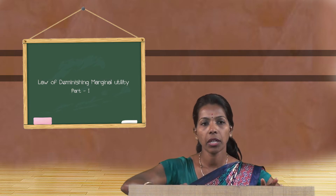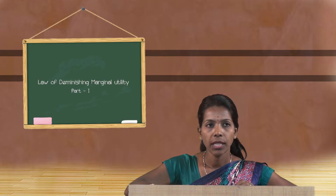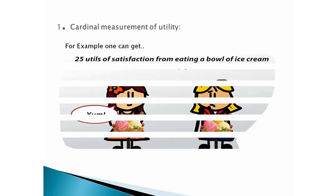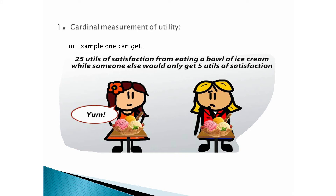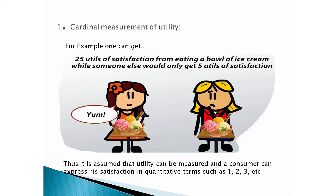The law operates under certain specific conditions, which economists call assumptions. The first assumption is cardinal measurement of utility — utility can be measured in terms of numbers. For example, a consumer can say they get 25 utils of satisfaction from eating a bowl of ice cream, while someone else might get only 5 utils. It is assumed that a consumer can express satisfaction in quantitative terms such as 1, 2, 3, and so on.